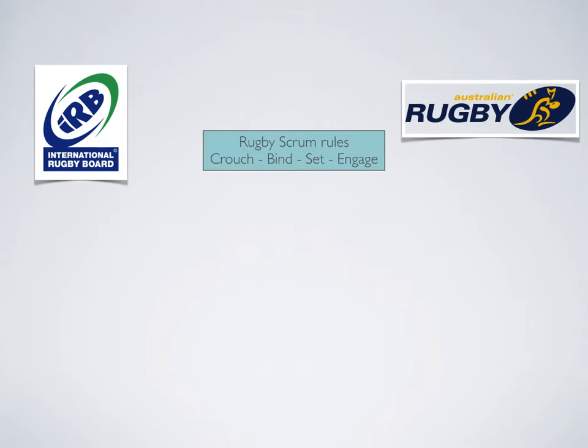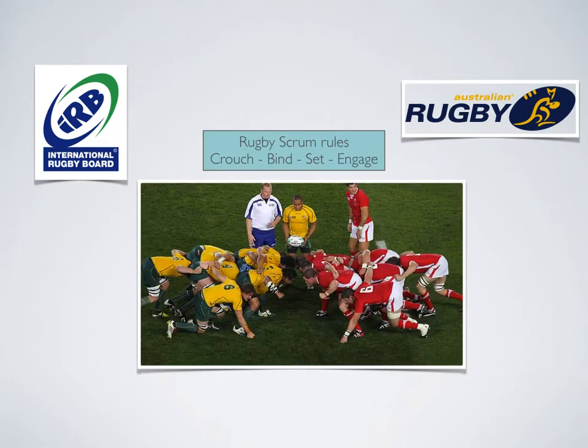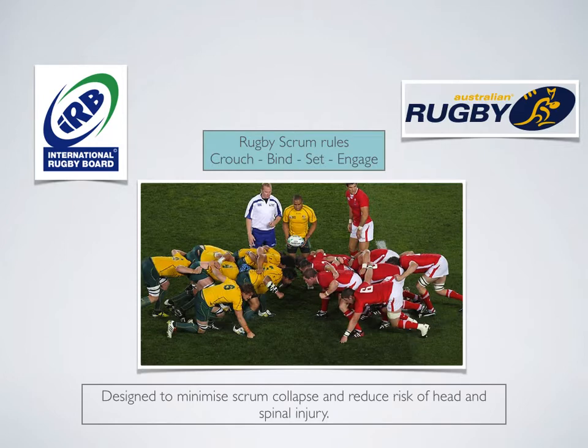Rugby union scrums are important set plays in the game. They are also, however, places where serious injury can occur. Scrum rules are important to keep players safe. Recently, the International Rugby Board and the Australian Rugby Union initiated the Crouch Bind Set Engage command. This is designed to make scrums safe, to ensure that players bind properly and to reduce the force with which teams enter the scrum. It is designed to minimise scrum collapse and reduce the risk of head and spinal injury.